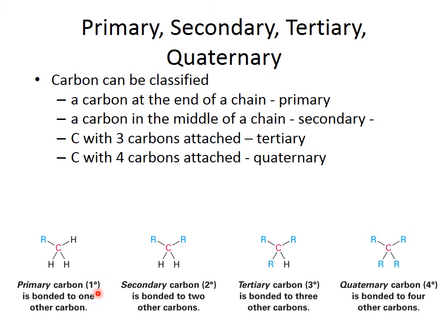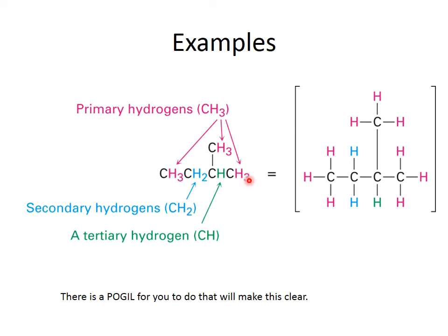Primary, secondary, tertiary, and quaternary — these are the symbols used for each. If we look at a compound, we can see some examples. A carbon that has three carbons attached is a tertiary carbon. A carbon with one carbon attached is a primary carbon. A carbon with two carbons attached is secondary.